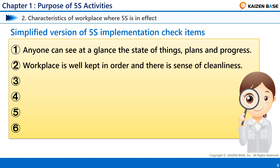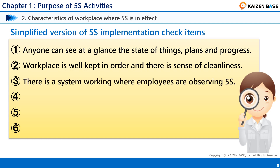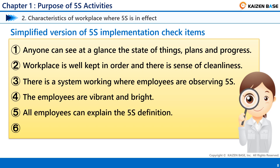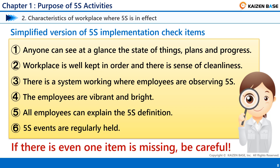Item 2: The workplace is well kept in order and there is a sense of cleanliness. Item 3: There is a system working where employees are observing 5S. Item 4: The employees are vibrant and bright. Item 5: All employees can explain the 5S definition. Item 6: 5S events are regularly held. What do you think? How many items are practiced in your workplace? Be careful — if even one item is missing, it is necessary to reform the awareness of 5S now.